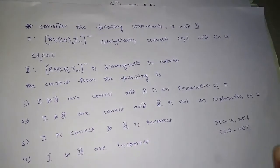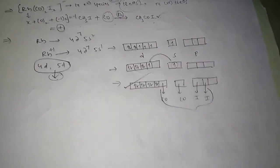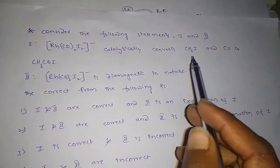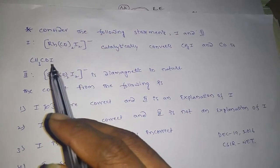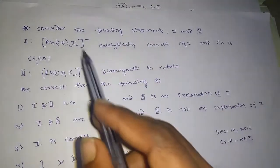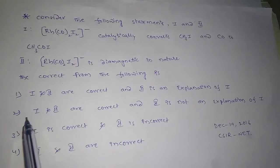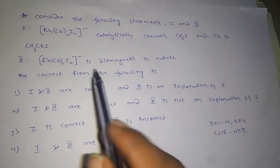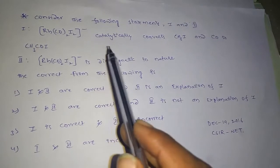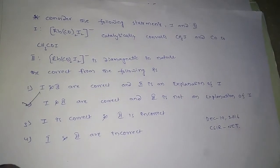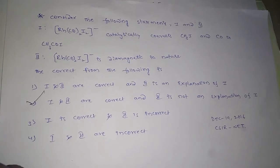However, the diamagnetic nature of the rhodium complex does not explain its catalytic property — the conversion of methyl iodide and carbon monoxide to methyl carbonyl iodide. Statement 2 is not actually explaining statement 1. Therefore, option 2 is the right answer: both 1 and 2 are correct, but 2 is not an explanation of 1. Thank you — if you like my videos, please subscribe to my channel.